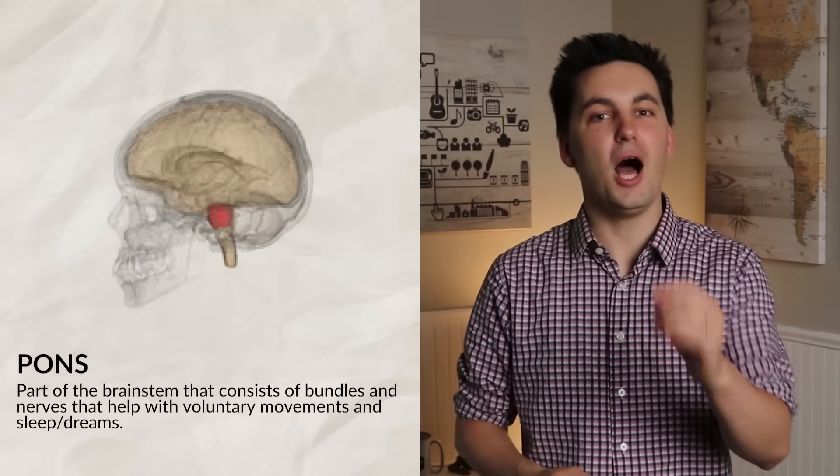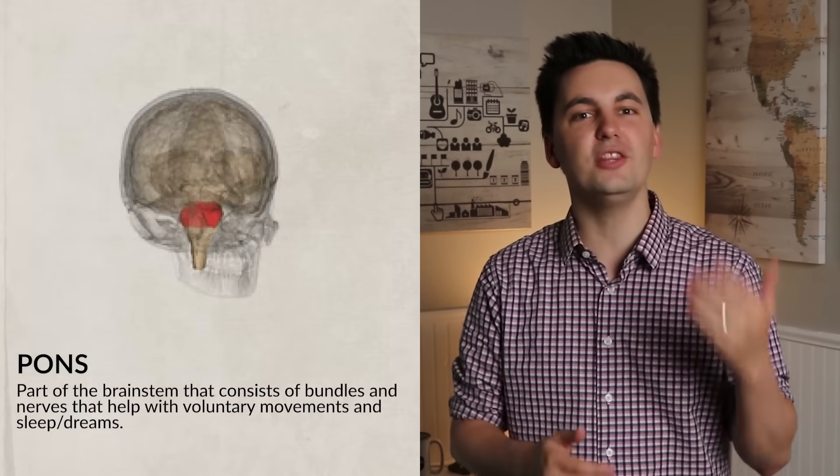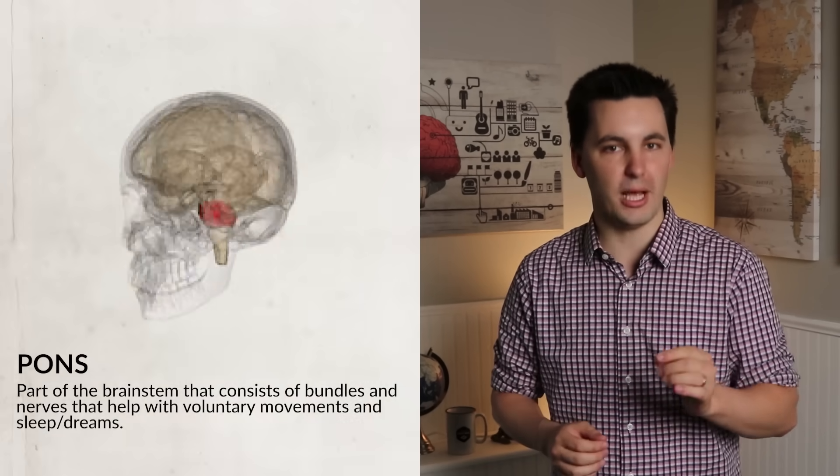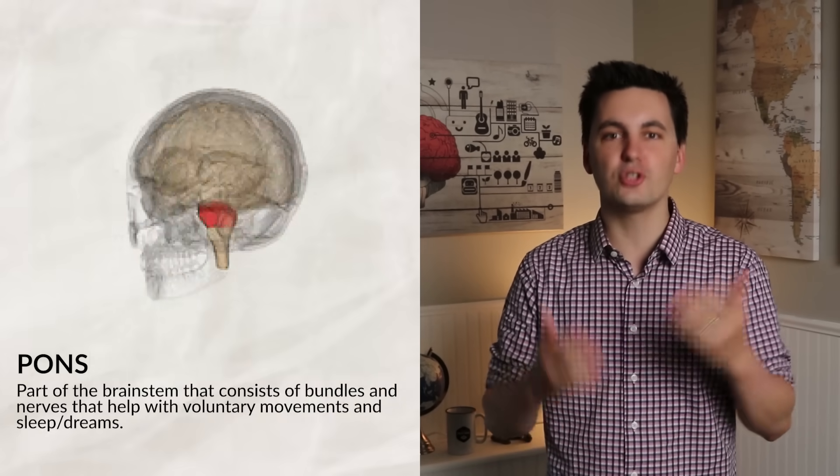On top of the medulla is the pons. The pons is primarily a bridge between the different areas of the nervous system. It connects the medulla with the cerebellum, and it works with the cerebellum to coordinate movement. The main functions of the pons that we're going to focus on this video is with sleep and dreams. A tip for remembering the pons is to think of the pons as a pillow, P for pillow, and it's located on top of the bed, B for brainstem.